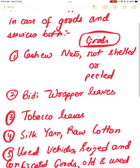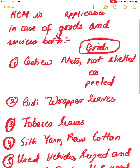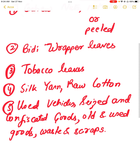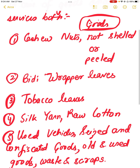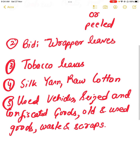The goods for which RCM is applicable are: number one, cashew nuts not shelled or peeled; beedi wrapper leaves; tobacco leaves; silk yarn; raw cotton; used vehicle; seized and confiscated goods; old and used goods; and waste and scraps.